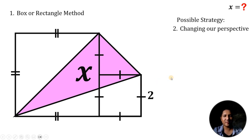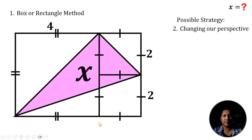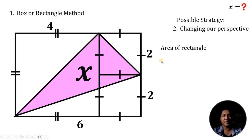To use the rectangle method, what we're going to do is to complete this rectangle. We have here a whole rectangle wherein this side measures 2, so the other side must also equal 2. The length of the larger box must be equal to 4 because we have 2 plus 2. And the length of the rectangle must be equal to 4 plus 2, which is 6. We can now find the area of the whole rectangle, which is 4 multiplied by 6, equal to 24 square units.